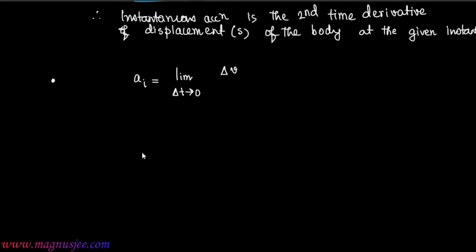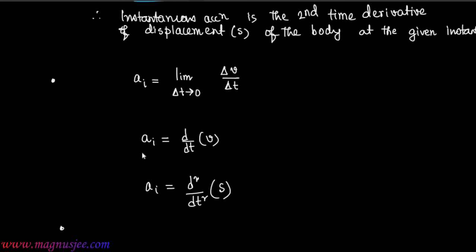So, we can write down three expressions for instantaneous acceleration. First: aᵢ equal to limit delta t tends to zero of delta v by delta t. Second: aᵢ equal to dv by dt. Third: aᵢ equal to d² s by dt². In vector form, vector aᵢ is equal to d² by dt² of displacement vector s.